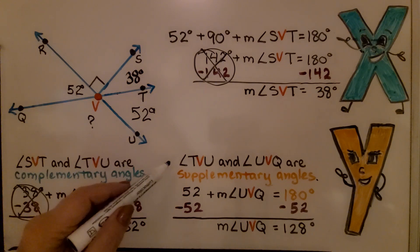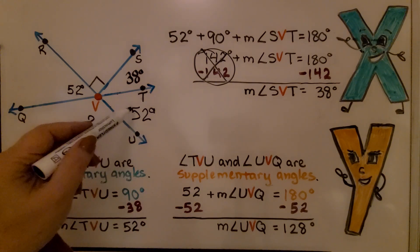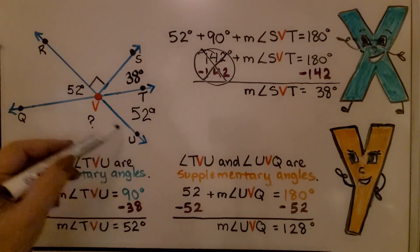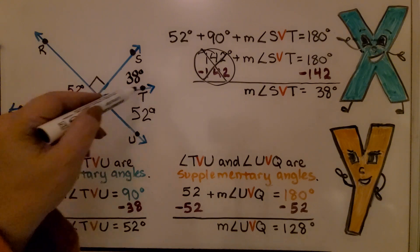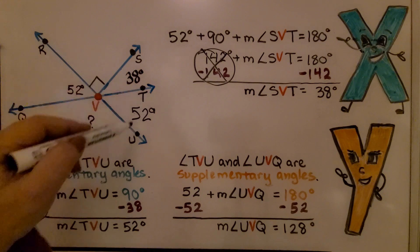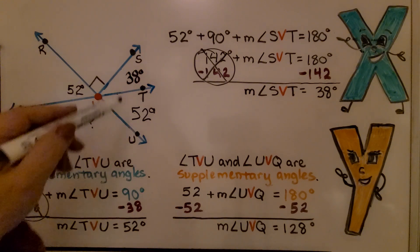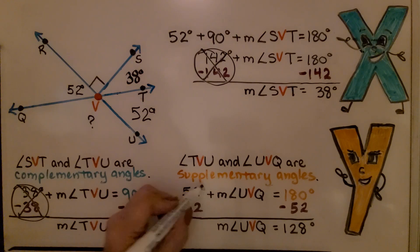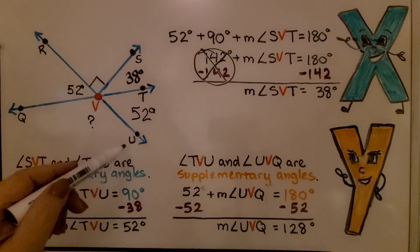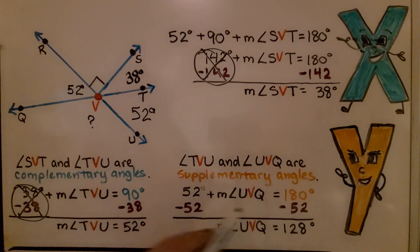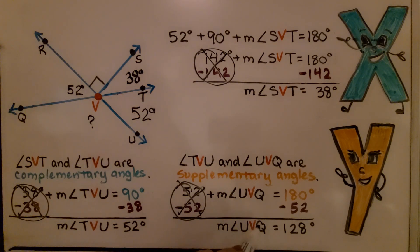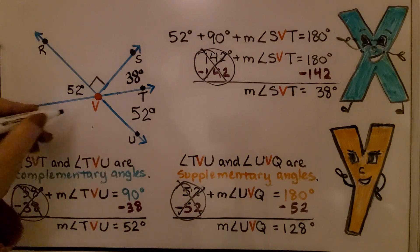Angle TVU is 52 degrees. Now let's find angle UVQ. Since these two angles form a straight line, they're supplementary. So: 52 degrees plus the measure of angle UVQ equals 180 degrees. Subtracting 52 from each side eliminates the 52, and we get the measure of angle UVQ equals 128 degrees.